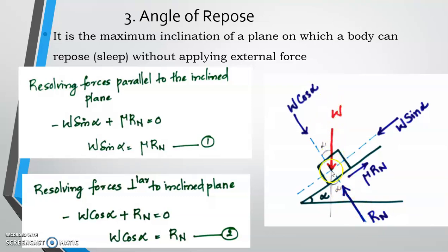Weight acts vertically downwards. Resolving forces: the component perpendicular to the incline is W cos alpha, and the component parallel to the incline (opposing motion) is W sin alpha. If this angle is alpha, by geometry the related angles are also alpha.